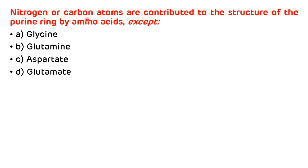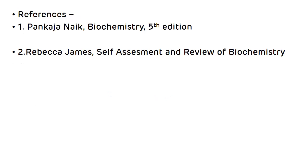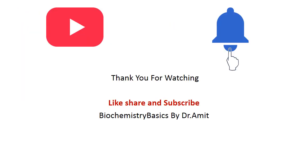MCQ 4: Nitrogen or carbon atoms are contributed to the purine ring by amino acids except — A) glycine, B) glutamine, C) aspartate, D) glutamate. Answer: D — glycine contributes C4, C5, N7; aspartate contributes N1; glutamine contributes N3 and N9; glutamate does not contribute. Thank you for watching. Please like, share, and subscribe to Biochemistry Basics by Dr. Amit, and don't forget to press the bell icon.